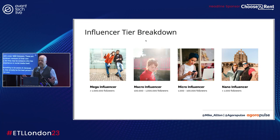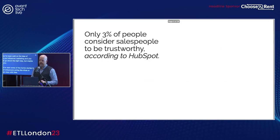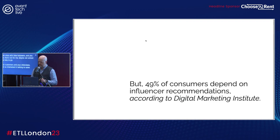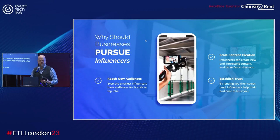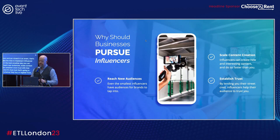Maybe you've seen horror stories of influencers acting like divas or padding their stats with fake followers and you think that's not for me. Maybe old school sales is the way to go — except your customers and attendees aren't as interested in talking to salespeople, but they do listen to influencers. As a brand or event that takes the time to implement influencer marketing in the best possible way, you can expect to reach new audiences, scale content creation, and establish more trust with that audience. That trust determines whether they register with you or someone else. If you want to be top of mind and tip of tongue, influencer marketing is an exceptionally effective means to that end.